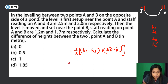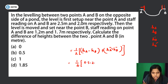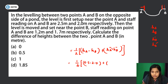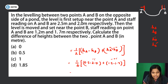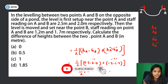From the first setup: 2.5 − 2.0 = 0.5. From the second setup: 1.2 − 1.7 = −0.5. Average difference in height = (0.5 + (−0.5)) / 2 = 0.0 meters. The correct answer is 0.0 meters.